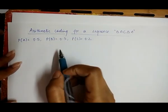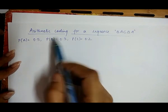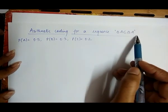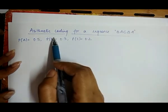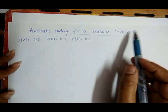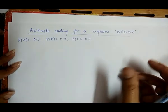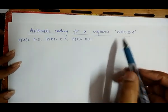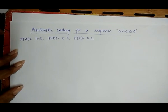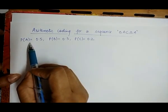Hello friends. Today we discuss how we find a tag value for a sequence which is an alphabetic sequence — BACBA — by arithmetic coding. As we already discussed in our previous videos, we found tag values for numeric sequences like 1 2 3 4, but this video describes a sequence which is in alphabetic form. The sequence is BACBA, and the probabilities P(A), P(B), and P(C) are given.